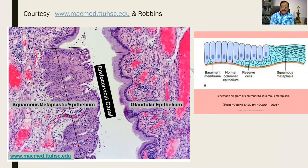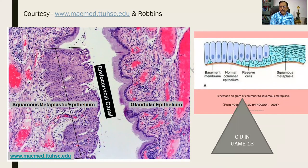This squamous metaplasia can occur elsewhere, such as in the bronchus, and there are other types of metaplasia which we shall see in the theory class. But this is for the microscopy. I hope that you have registered and selected your pictures. See you in GAME 13.